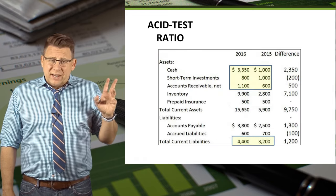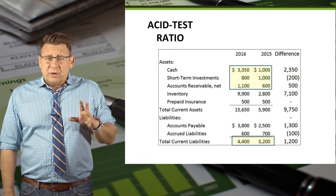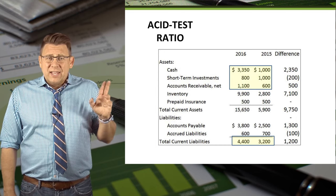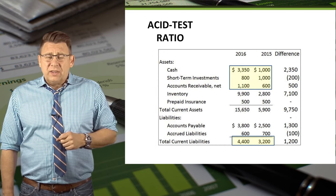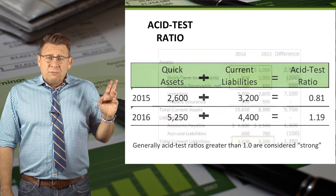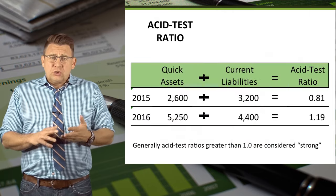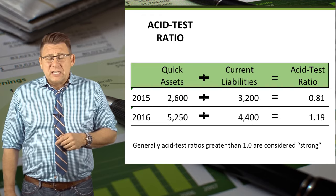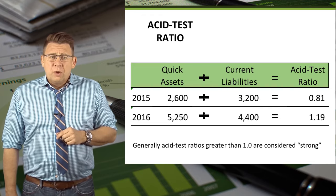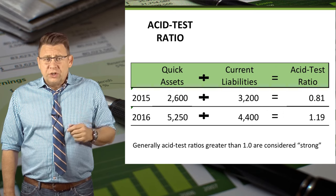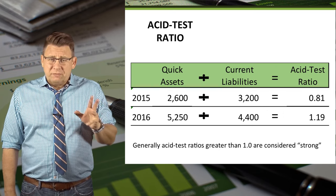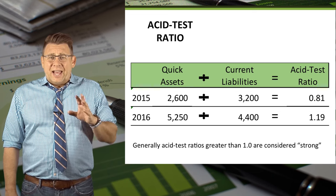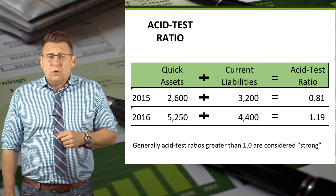Here is the current asset and liability section of a sample company's balance sheet. We'll use the highlighted current assets and liabilities to determine the acid test ratio. For 2015, cash, short-term investments, and net AR divided by current liabilities gives us an acid test ratio of 0.81, which is pretty good. For 2016, cash, short-term investments, and net AR divided by current liabilities gives us an acid test ratio of 1.19.